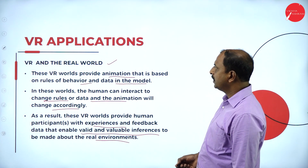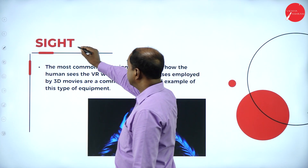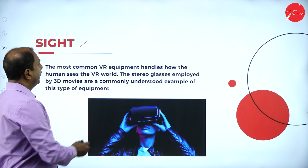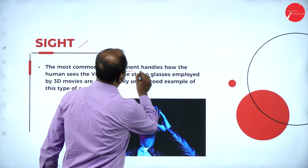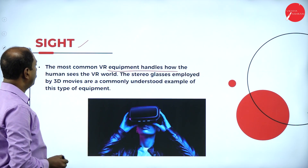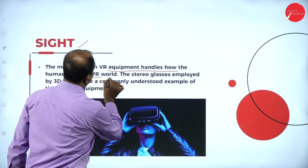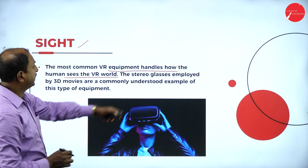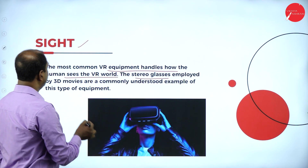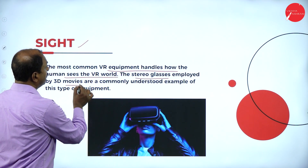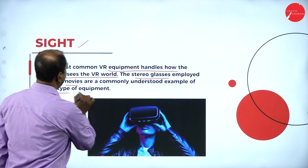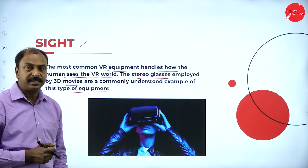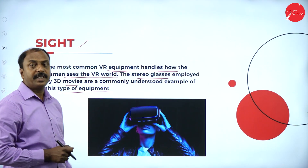Another application of virtual reality is with respect to sight. The common VR equipment handles how the human sees the VR world — this is called sight. Stereo glasses, such as those employed by 3D movies, are a commonly understood example of this type of equipment. Just as we wear 3D glasses for 3D movies, this is an example of a sight application of virtual reality.